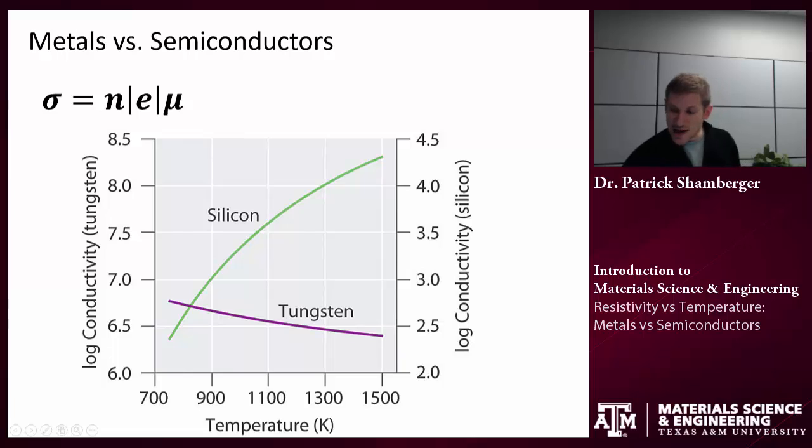So what that means is that we have opposite effects in metals and in semiconductors. So in silicon, the conductivity will increase. And that's largely because the number of free carriers increases. Yes, the mobility will decrease a little bit, but not enough to outweigh this increase in number of free carriers. So that's the silicon case.